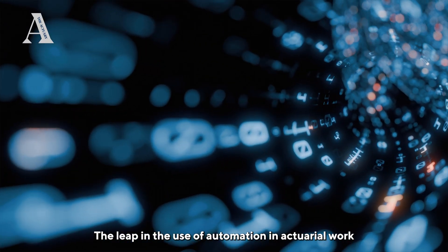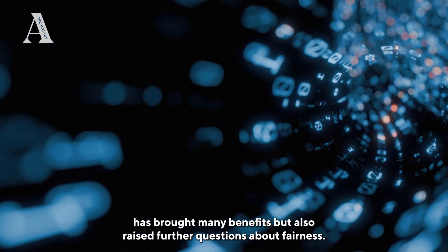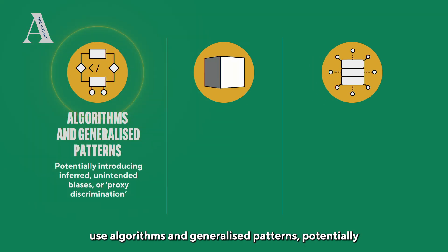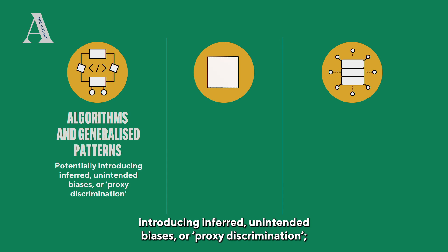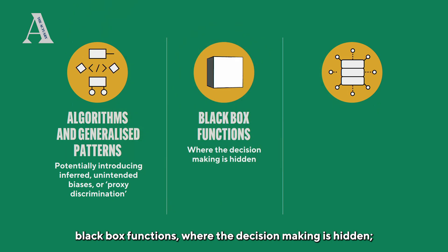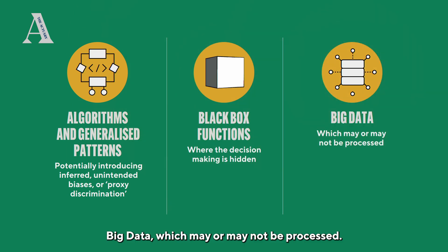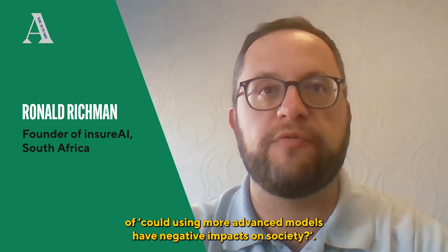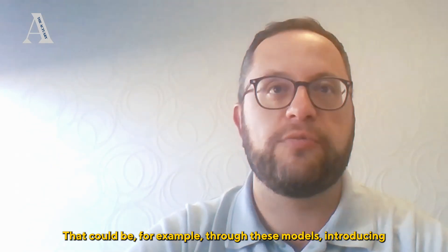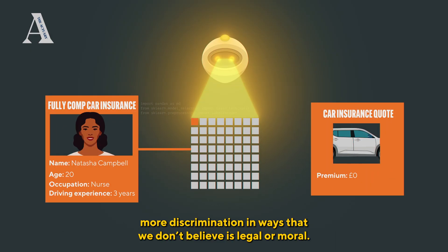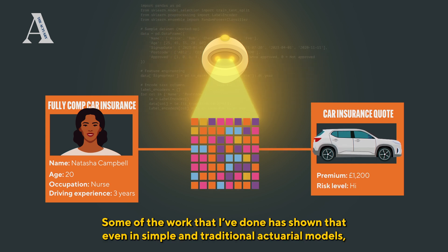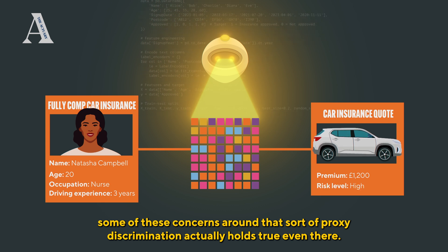Enter predictive models and machine learning in a big way. The leap in the use of automation in actuarial work has brought many benefits but also raised further questions about fairness. Simply put, this is because these models use algorithms and generalized patterns, potentially introducing inferred, unintended biases or proxy discrimination — black-box functions where the decision making is hidden. Other ethical aspects include whether using more advanced models could have negative impacts on society, such as introducing more discrimination in ways that are not legal or moral. Even in simple and traditional actuarial models, some of these concerns around proxy discrimination hold true.